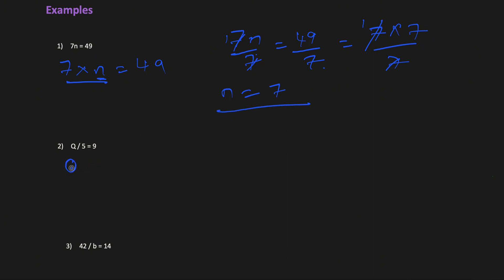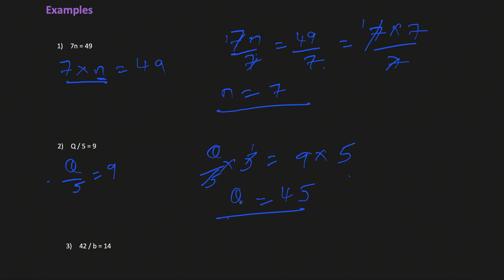In the second equation, q divided by 5 equals 9. Since q is divided by 5, to balance the equation we multiply both sides by 5: q over 5 multiplied by 5 equals 9 multiplied by 5. Since 5 divided by 5 is 1, we get q times 1 equals q, and 9 times 5 is 45. So q equals 45.